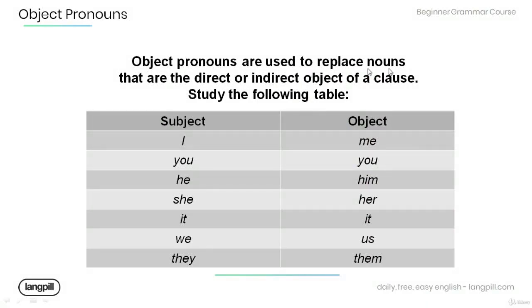Also note that the object pronoun comes after a verb or a preposition. Object pronouns are used to replace nouns that are the direct or indirect objects of a clause. Let's have a look at the table below.